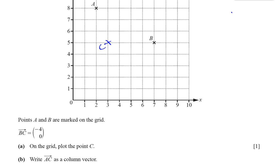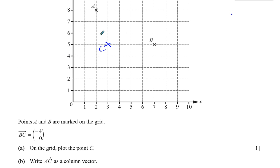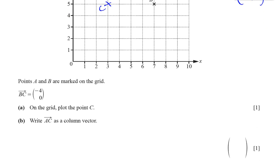Now, B says write A to C as a column vector. So how would you get from A to C? If I started at A and I want to end up at C, I've got to go, the top number remember represents the horizontal displacement. So you've got to go one space to the right and 1, 2, 3 spaces down, vertically down. So you've got 1, negative 3. So A to C is 1, negative 3. 1 and negative 3, right in the right space.